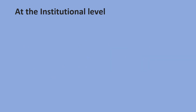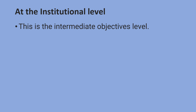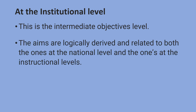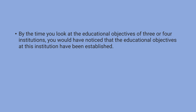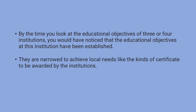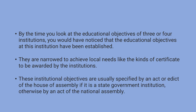At the institutional level, this is the intermediate objectives level. The aims are logically derived and related to both the ones at the national level and the ones at the instructional level. The educational objectives at institutions are narrowed to achieve local needs, like the kinds of certificate to be awarded. These institutional objectives are usually specified by an act or edict of the house of assembly if it is a state government institution, otherwise by an act of the national assembly.